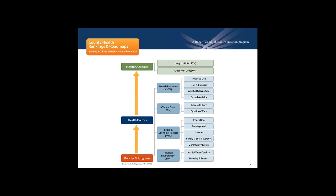Today's webinar focuses on alcohol and drug use, and we'll hear from Corey Davis and Robert Childs about their work advocating for and implementing naloxone access programs. Corey, when you take a look at our model, where do you see your work through the Network for Public Health Law? The work of the Network for Public Health Law really encompasses nearly all of this — we are available to help people working in public health dealing with really any of these issues, perhaps a little bit less on clinical care, but certainly the policy and legal aspects related to clinical care.